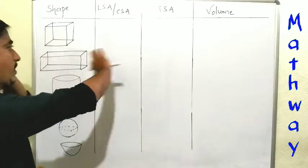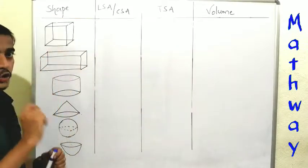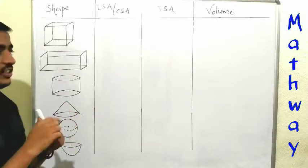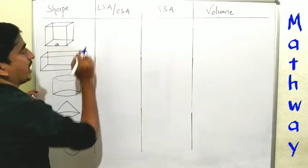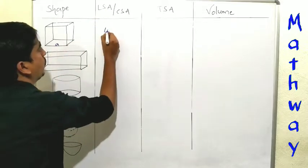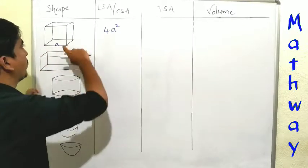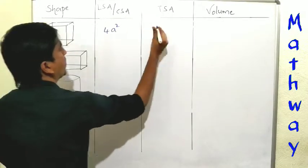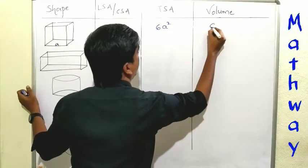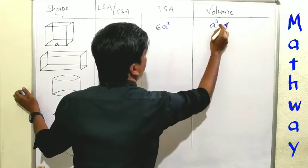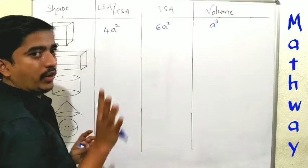Now, every formula. First shape is cube. So cube has all sides equal, all edges are equal. If one side is a, then lateral surface area of cube is 4a square. Total surface area of cube is 6a square. Volume of cube is a cube. LSA and TSA are in square units, volume is in cube units.